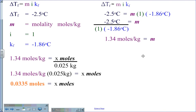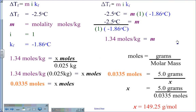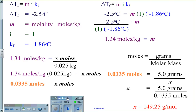From stoichiometry, moles equals grams over molar mass. Taking 0.0335 moles equals 5 grams divided by the molar mass, and rearranging algebraically, we get a molar mass of 149.25 grams per mole. This is the molar mass of the non-electrolyte solute.